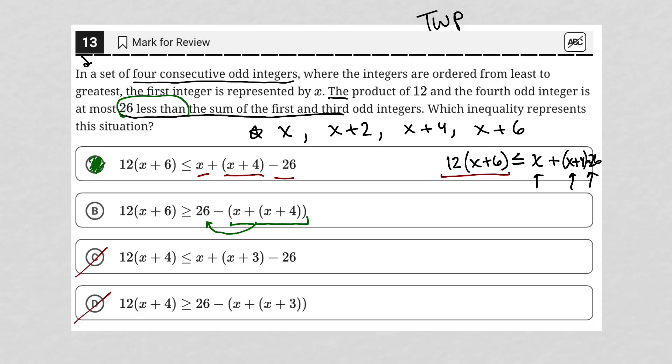I can see how students might choose choice B here, just given the order of how this is written. The 26 comes first in order, but it is not the right answer here. You must know what you have first, the sum of the first and third odd integers, and then 26 less that means you subtract 26 from that. So our answer here is choice A.